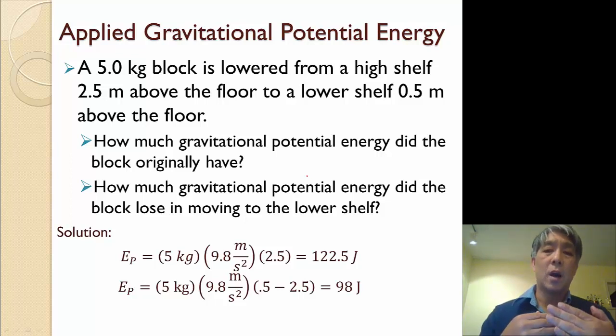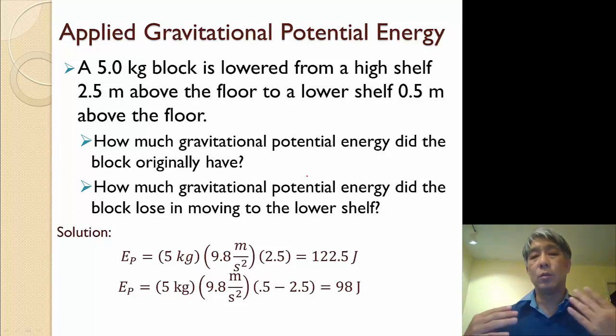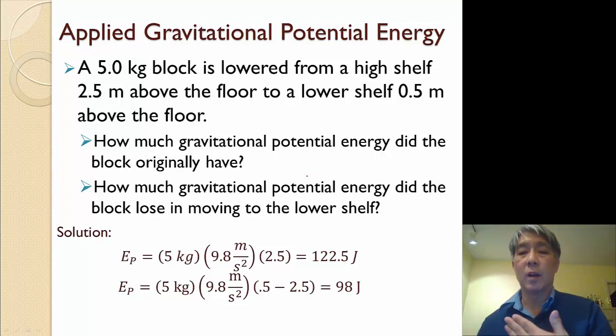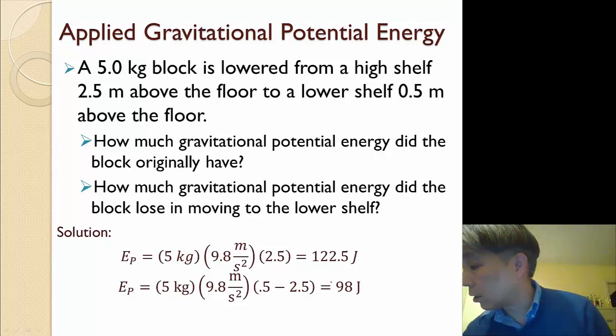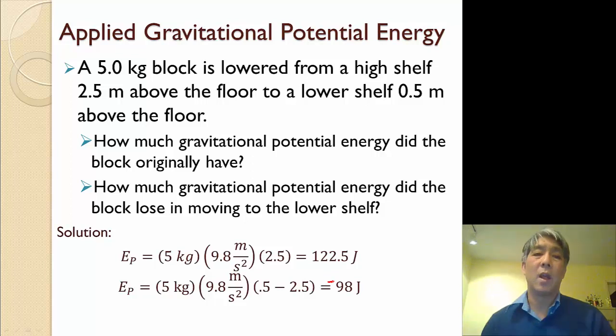In terms of how much energy did I lose moving to the lower shelf? I can just do Mg delta H, because M and G don't change. So I'm 0.5 minus 2.5, and so I lost negative 98 joules. The negative indicates that I lost it. I need to include it on this diagram, because I forgot the minus in the PowerPoint.